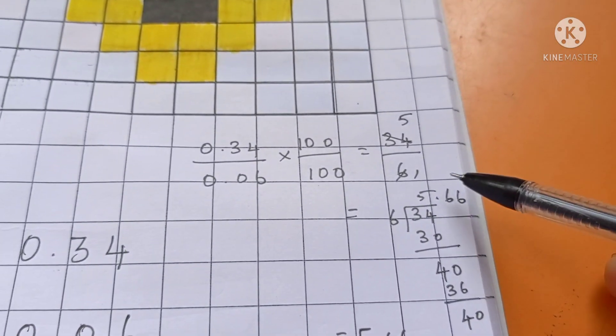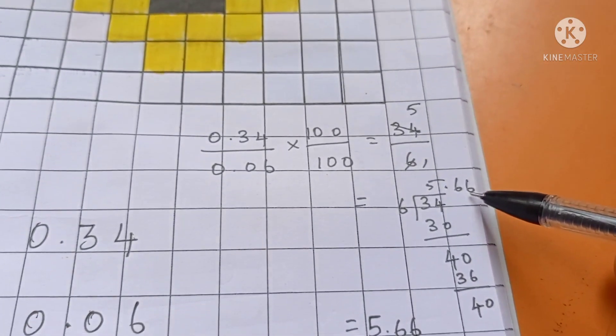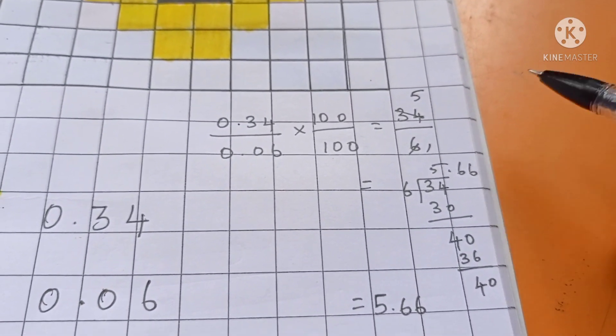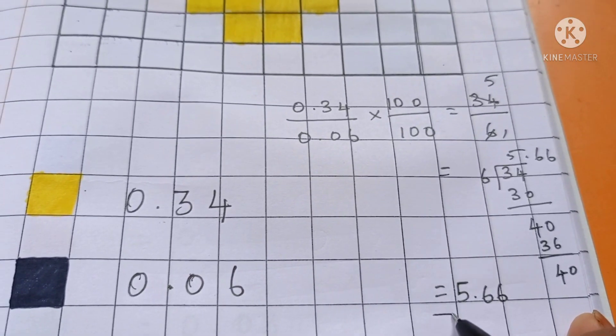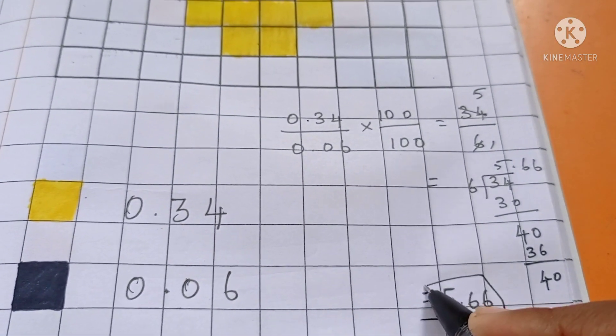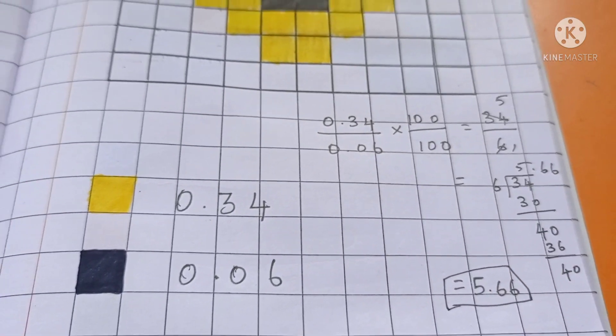So we keep adding 0. So it will be the 6 will be repeating same. So we can take the answer. 6, 5.66. 5.66 is the answer.